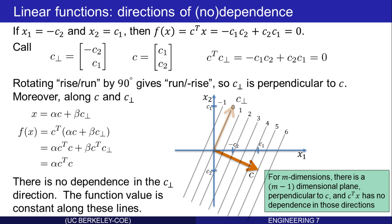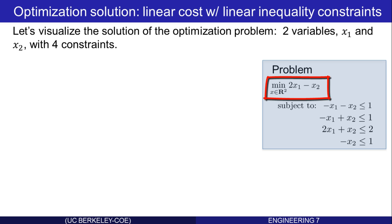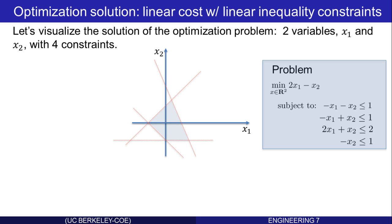Now we can visualize solutions to these types of optimization problems. Let's visualize one to a problem with two variables and four constraints. The problem is minimize 2x1 minus x2 subject to these four inequality constraints. These are the four inequality constraints we looked at earlier. Therefore, the feasible set, the set of points satisfying those inequality constraints, is simply that blue polytope. We're trying to minimize a function of the form c transpose x, where c1 is 2, and c2 is negative 1. That's the linear function we've already studied. We know that f increases linearly along the direction c, and has no dependence perpendicular to the direction c. Therefore, 2x1 minus x2 is 0 in that location. It's 1 along those lines.